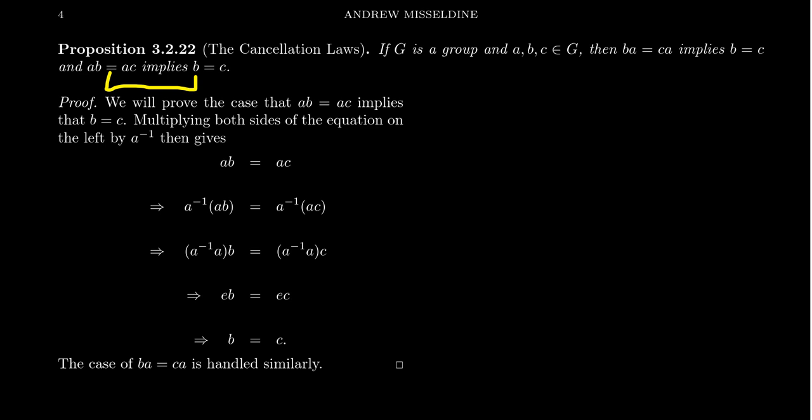So this is actually a conditional statement. If ab equals ac, that implies b equals c for any elements of the group. We're going to start off by assuming that ab equals ac. This is our starting point.